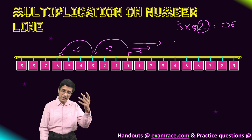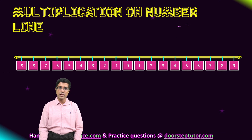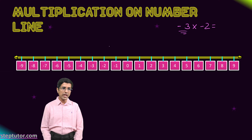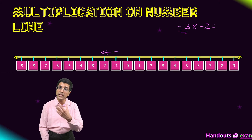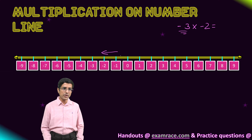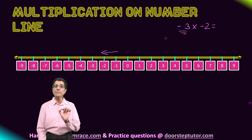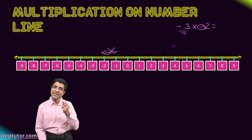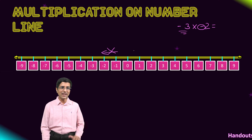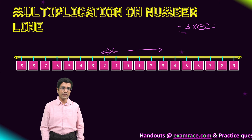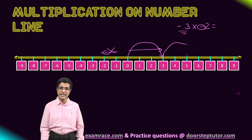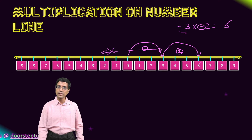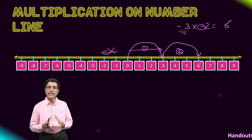Now the last case — minus 3 into minus 2. Normally minus 3 would have taken me towards the left of the number line. But because I am multiplying minus 3 with a negative number, I do not use the normal direction of minus 3; instead I change the direction and go in the positive direction. So instead of going towards the left, I go towards the right. I make a first jump to 3 and then a second jump to 6. The answer here becomes positive 6.